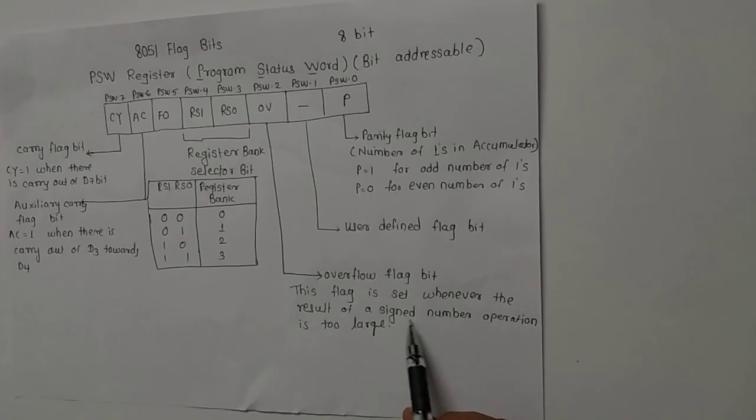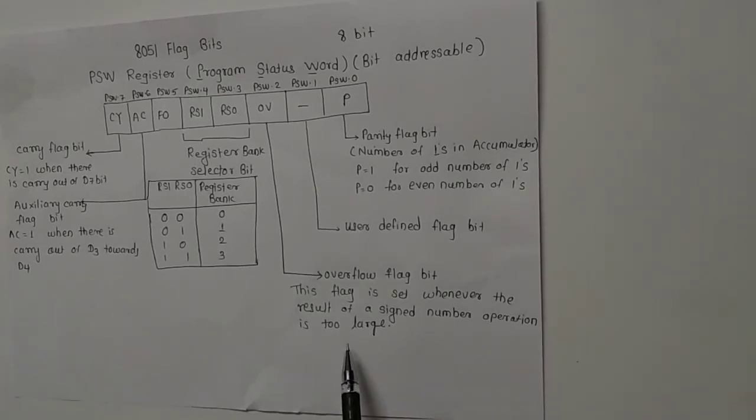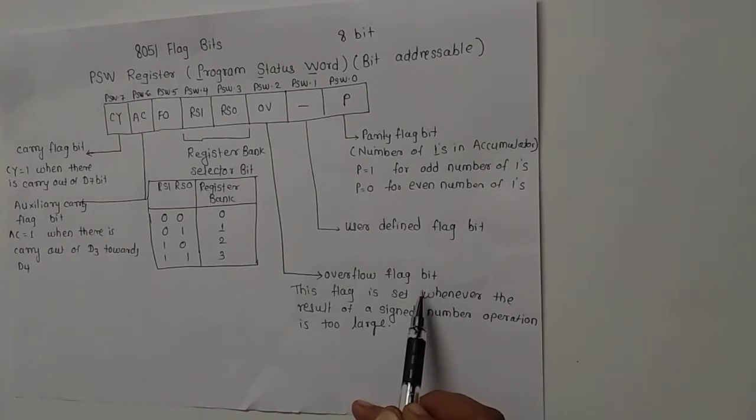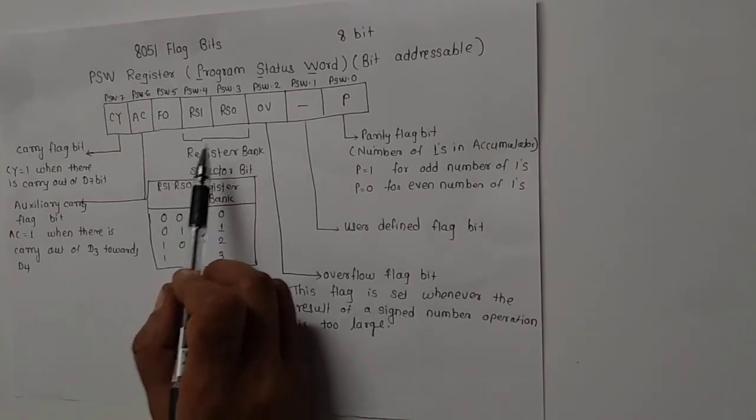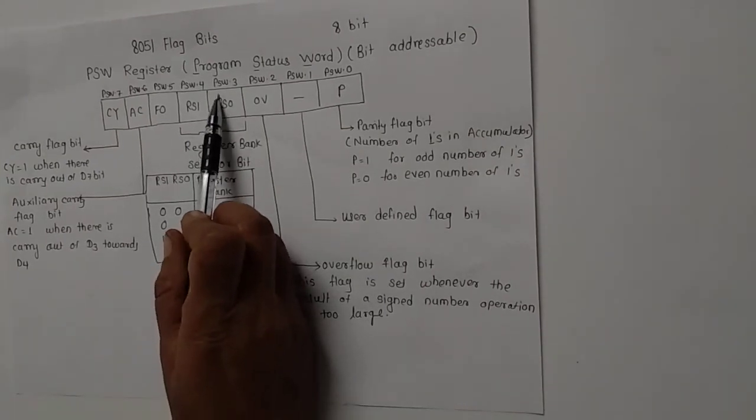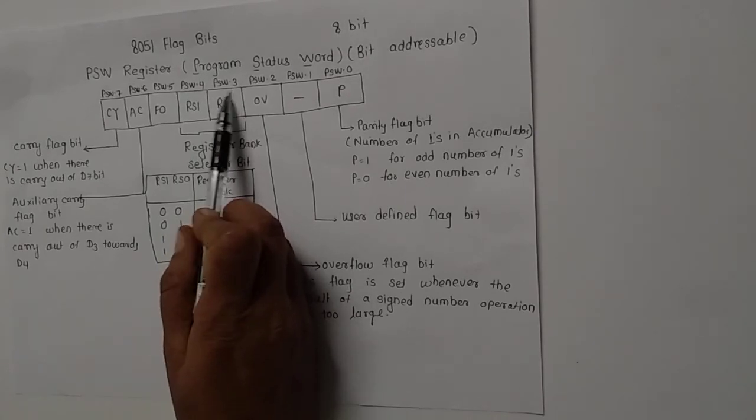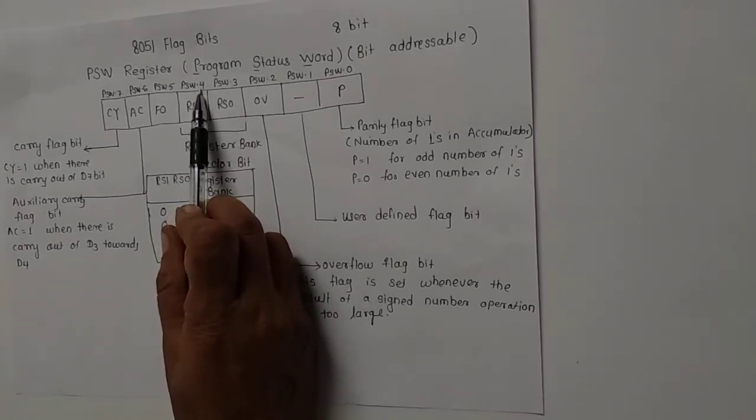This flag is set whenever the result of a signed number operation is too large. So whenever we have an operation related to a signed number and it is too large, it is indicated with this overflow flag bit.